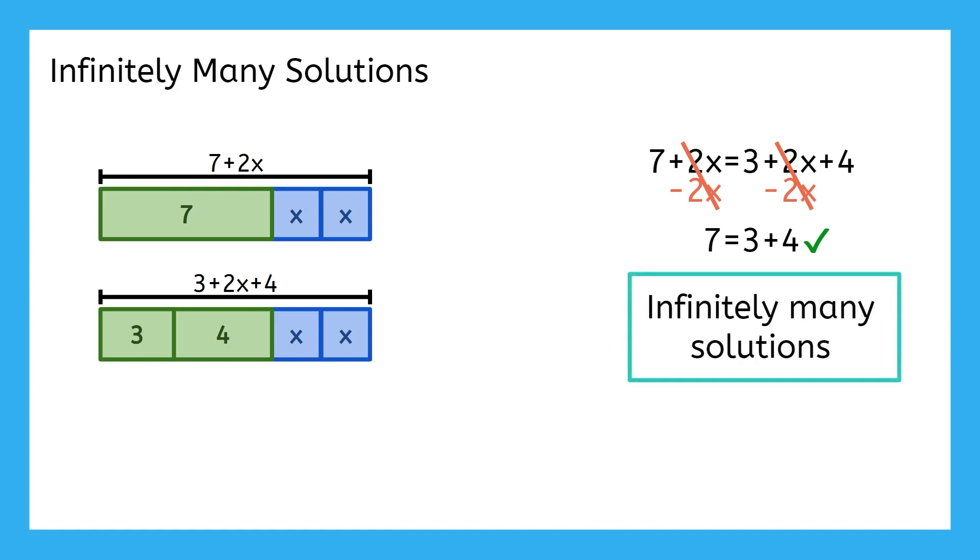What do you think would happen if the variables cancel each other out, but the constants that are left are not equal?